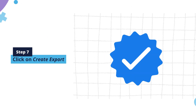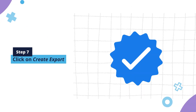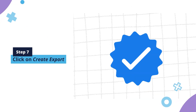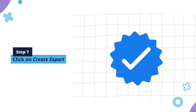Step seven: click on 'Create Export'. You will receive an email once your file is ready to download. This can take more than a few minutes if you have a lot of emails with large attachments.